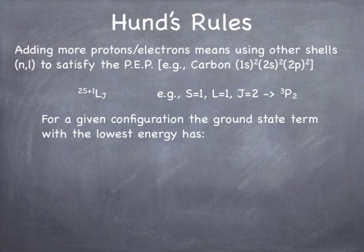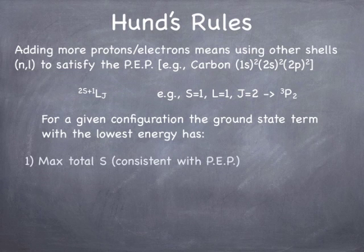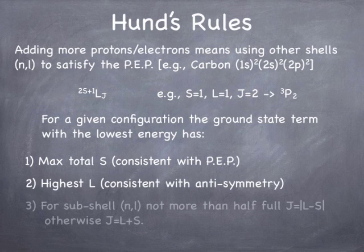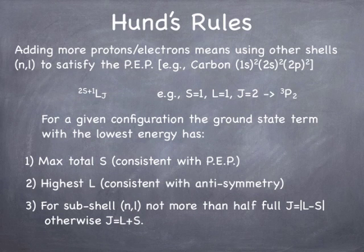And for a given configuration, for example, carbon at the top of the screen, the term that has the lowest energy is the one with the maximum total S, consistent with the Pauli exclusion principle. It's got the highest L, consistent with antisymmetry, that the overall wave function has to be antisymmetric with respect to interchange of any two electrons. And for a given subshell that's not more than half full, J is going to be L minus S, but if it is more than half full, J will be L plus S.